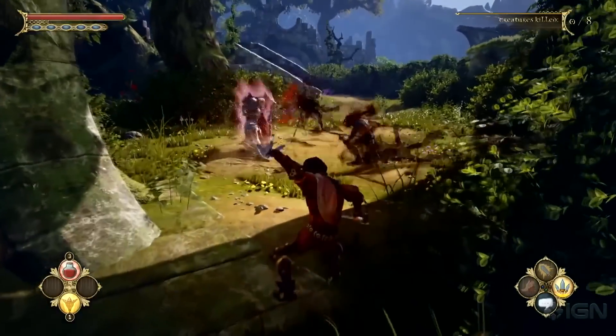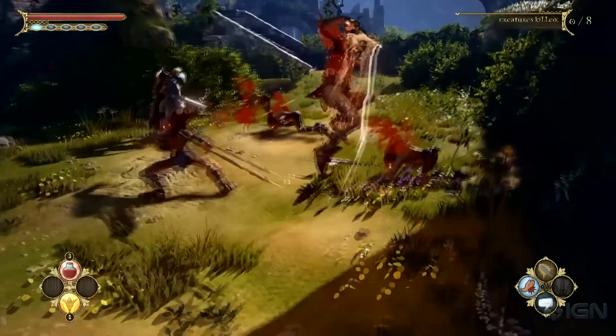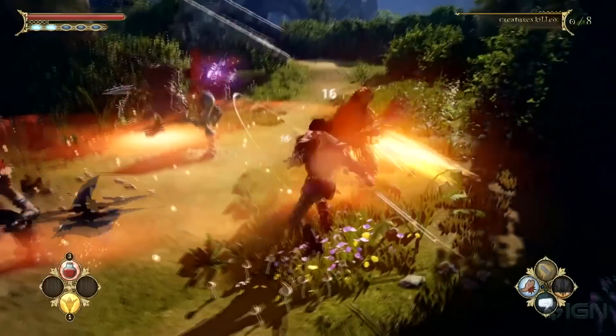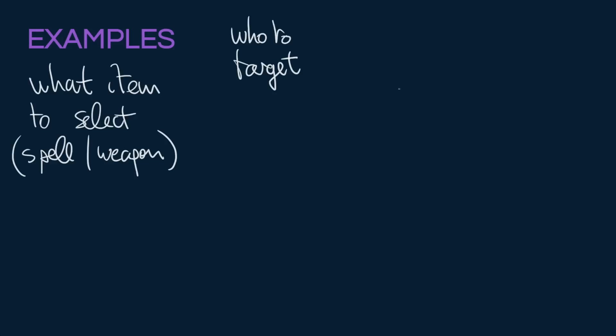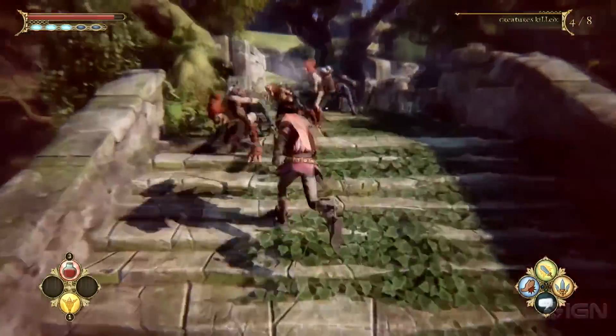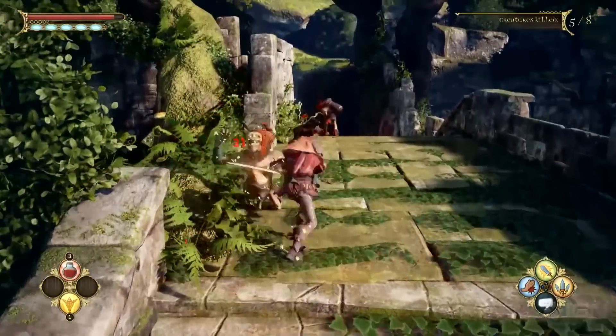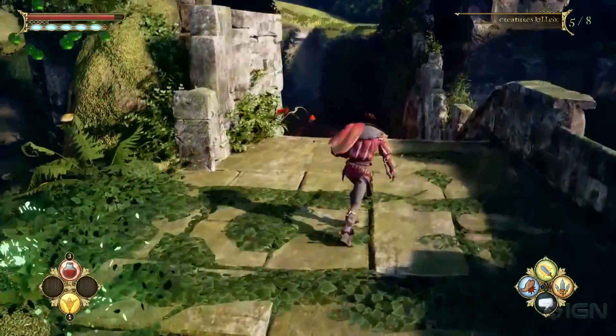Let's take a look at some examples. The typical one is what item to select, like a spell or a weapon, if you're in some kind of role-playing game or combat game, or deciding exactly who to target. If the enemies need to pick someone to cast their spell on, deciding where they should move of all the many options, where they should take cover or hide, and which path to take when they're retreating.